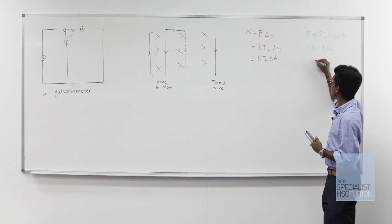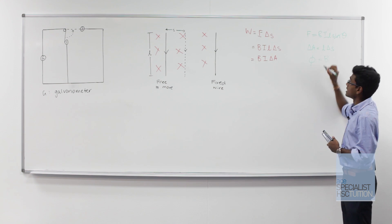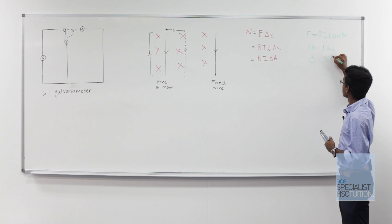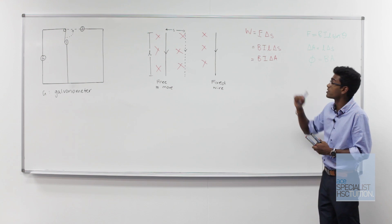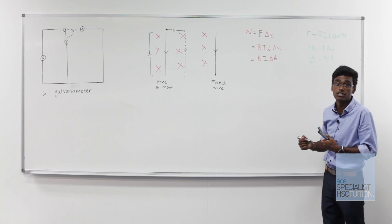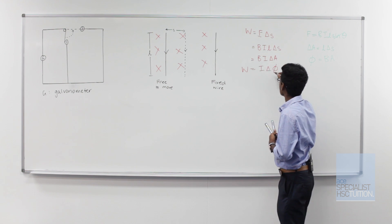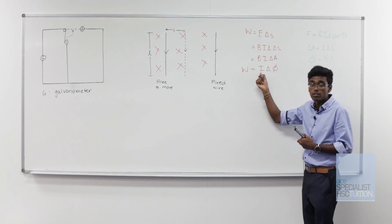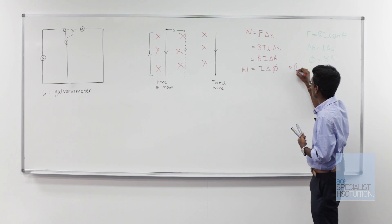we know that flux is equal to magnetic field strength B times area. So change in flux is equal to magnetic field strength times change in area. So let's put this last step into our formula. So work is equal to current times the change in flux. That's going to be equation number one.